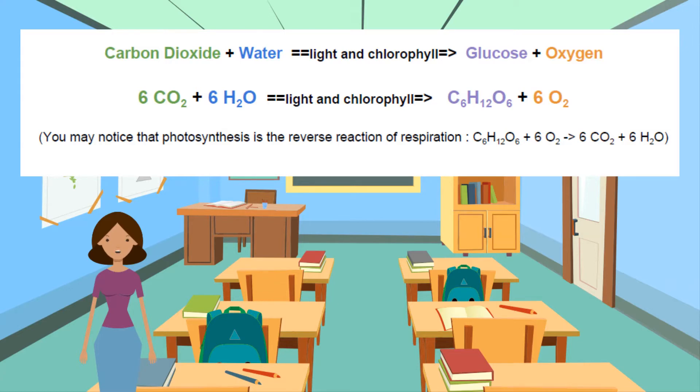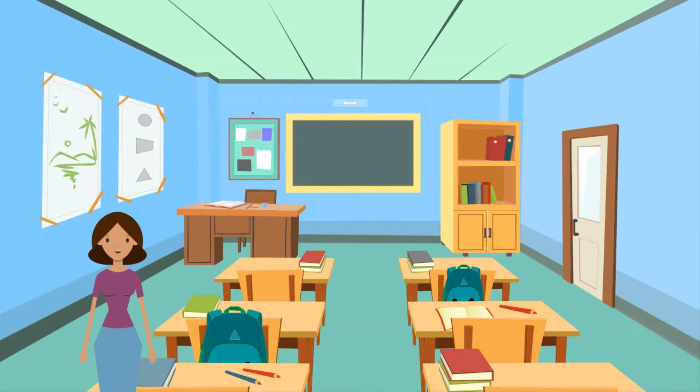This is carbon dioxide plus water, with the addition of light and chlorophyll, produces glucose plus oxygen. You may notice that photosynthesis is the reverse reaction of respiration. You need to know how the plant gets the carbon dioxide and water required for photosynthesis.